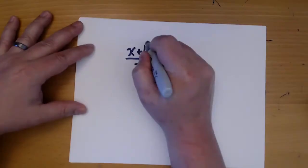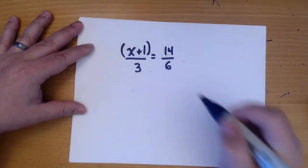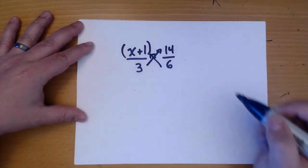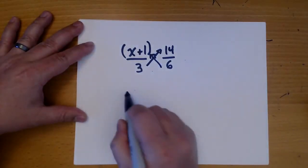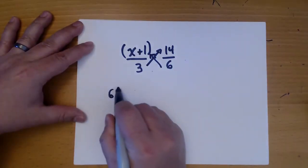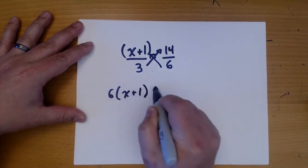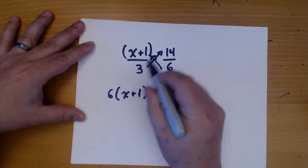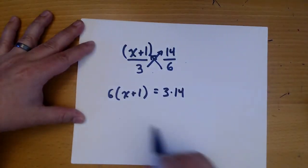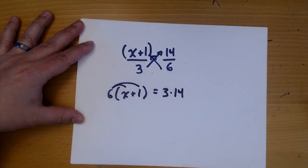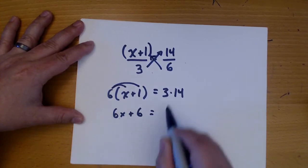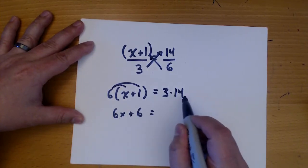Okay, so first we wrap the binomial in parentheses and then cross multiply. So on this side we'll have 6 times x plus 1, and 3 times 14. Now we distribute. And 3 times 14 is 42.